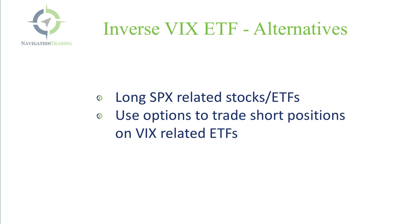So what are the alternatives if you want to be short VIX or short volatility? One option is to be long SPX-related stocks or ETFs. Since the VIX and SPX are inversely correlated, if your assumption is that volatility will contract, you can simply buy SPY, Apple, Amazon, or dozens of other stocks and ETFs highly correlated to the S&P 500. Alternatively, as we detail in our course 'How to Trade the VIX with 92.3% Accuracy,' we teach how to use options to trade short positions on VIX-related ETFs. Both of these are much better alternatives to trading inverse VIX ETFs.